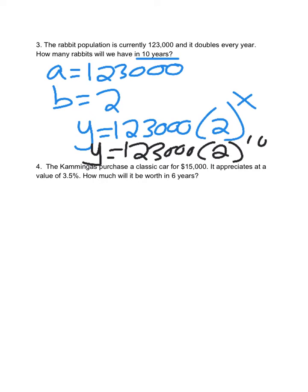123,000 times 2 to the 10 is 125,952,000. So you have 125,952,000 rabbits.